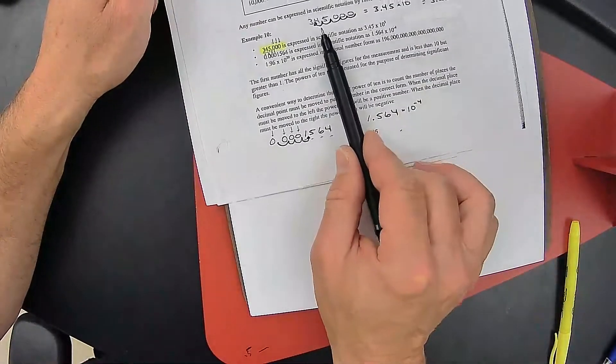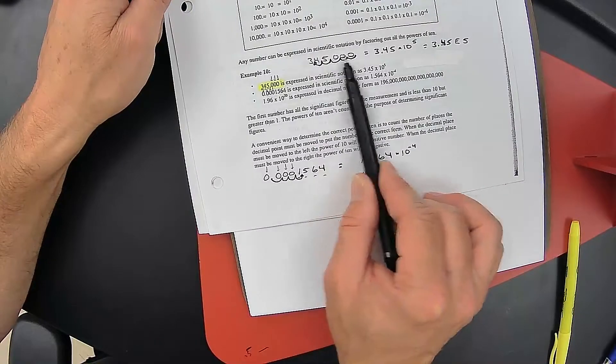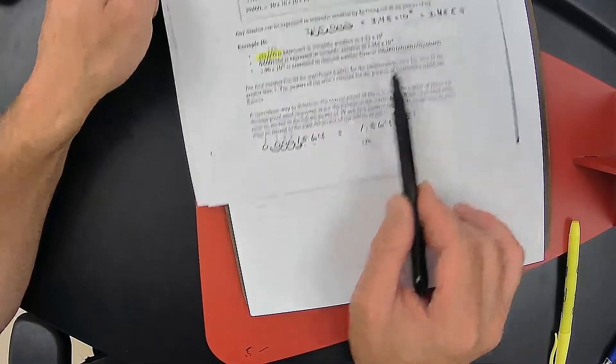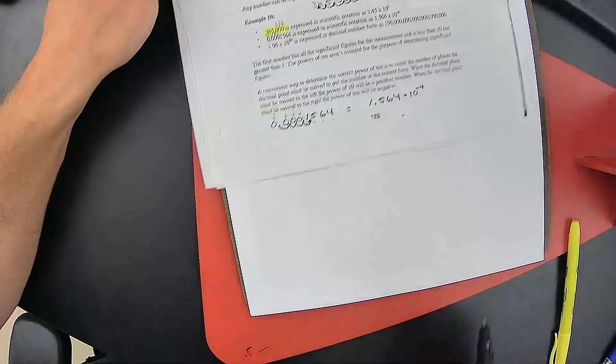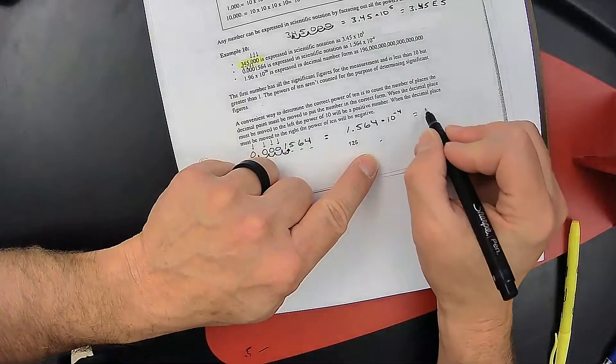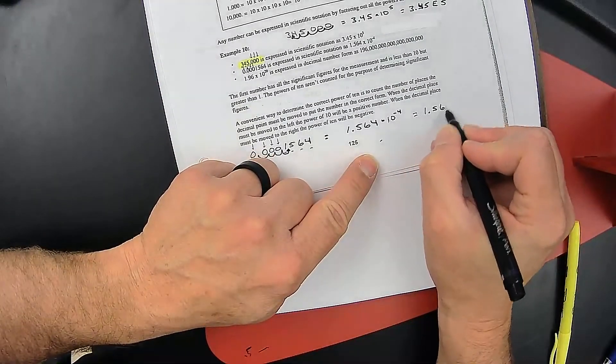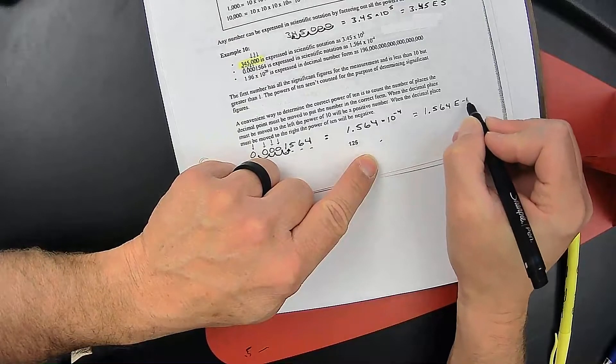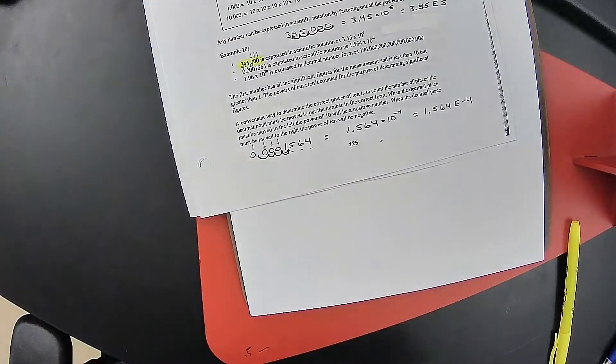The way I remember that is if I've got a number greater than one, I'm going to have a positive exponent. If I have a number less than one, I'm going to have a negative exponent. Once again, we can write this as 1.564 E to the negative fourth, either one.